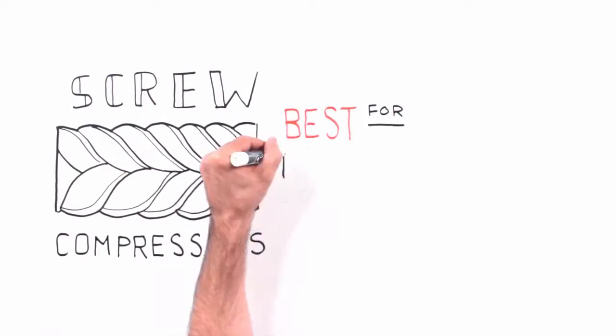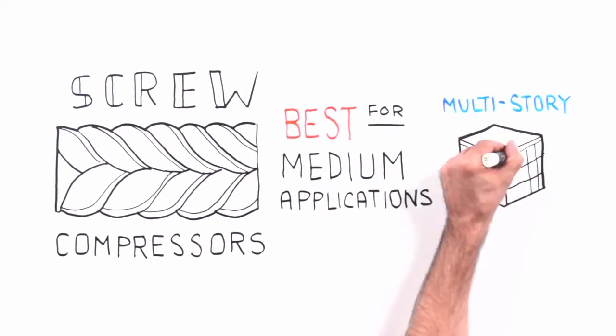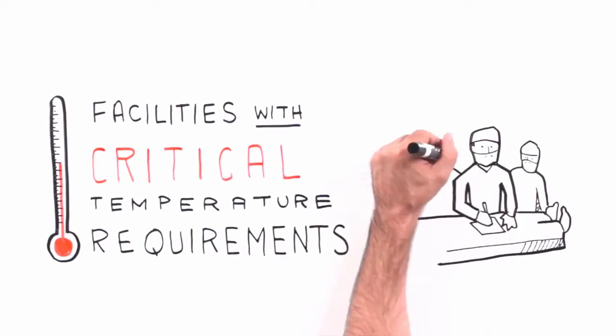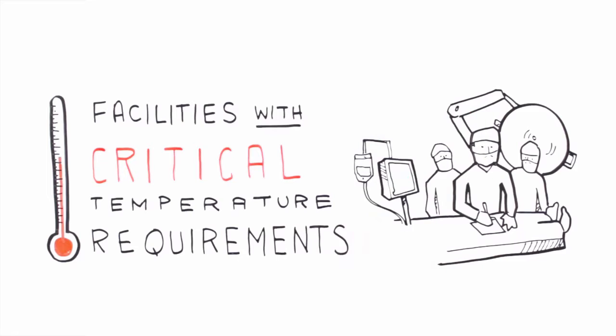Screw compressors are best for medium applications such as multi-story office buildings and facilities with critical temperature requirements such as surgical centers, since you can vary the cooling size at finite levels.